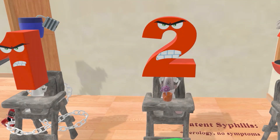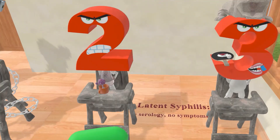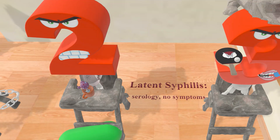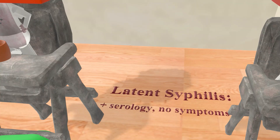Before moving on to tertiary syphilis, we notice 'latent syphilis' written on the ground between sons two and three. After secondary syphilis, there's a latent phase where the disease enters a dormant or asymptomatic stage. Although there will be positive serology, there will be no symptoms. There is early and late latent syphilis, but since this is not high yield, we won't discuss it further.